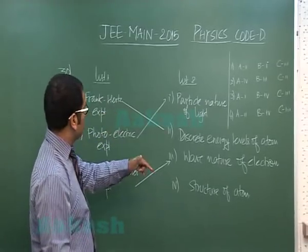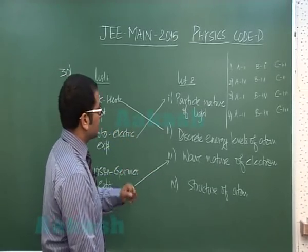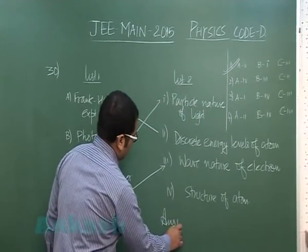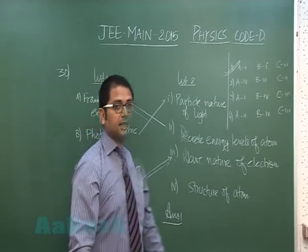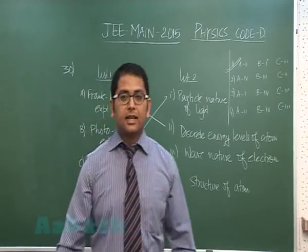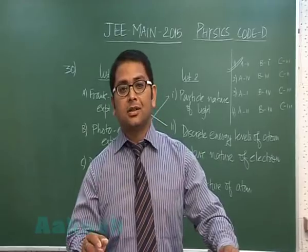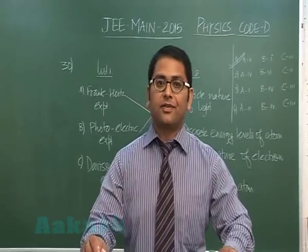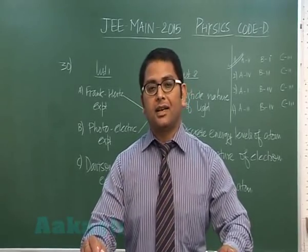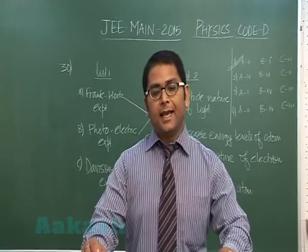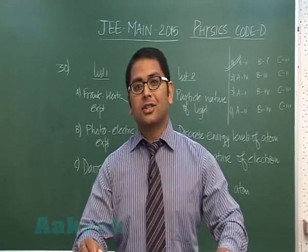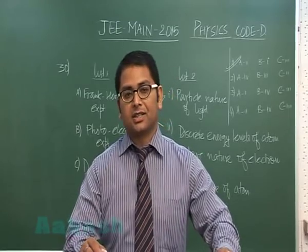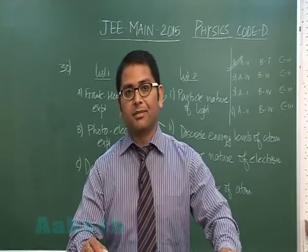So I have A as 2, B as 1, C as 3, which leads to option 1. The answer is option 1 for question number 30. That's all for the discussion session of offline questions related to JEE Main 2015. Wishing you very bright luck for the examination and lots of best wishes for your JEE Advanced examination — subject to selection. Thank you very much.